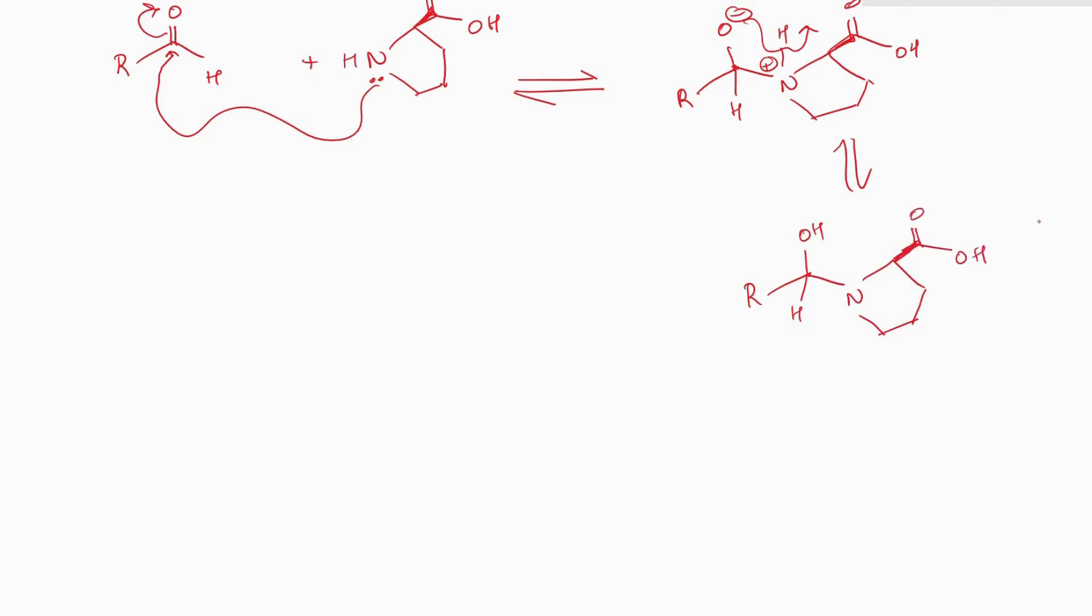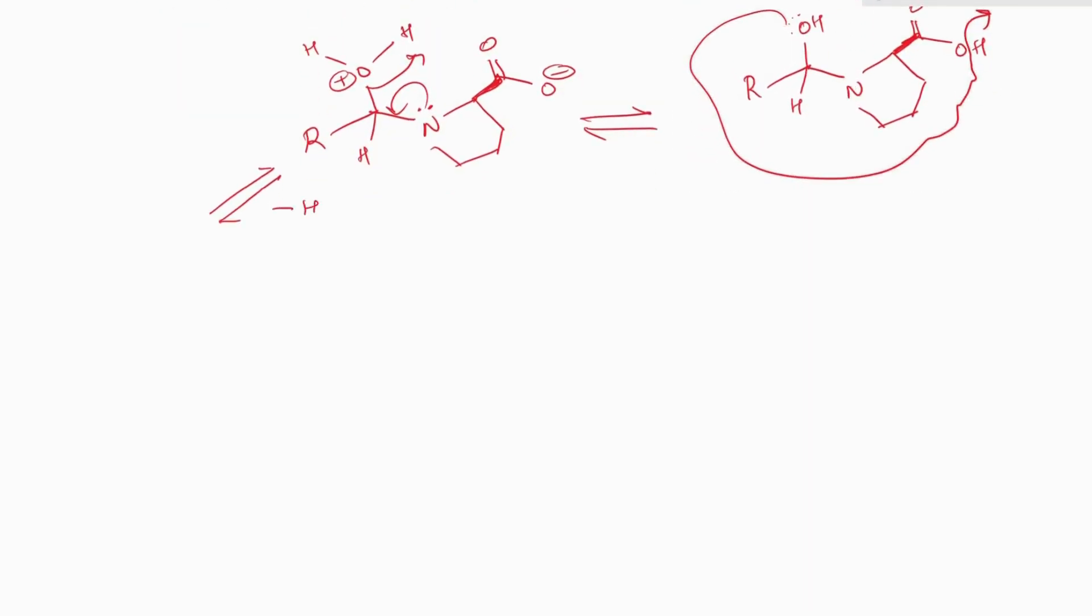Now the proton of this acid group is highly acidic, so it is extracted by this oxygen and formation of water molecule, which is a good leaving group. Our next step will be removal of this water molecule as a leaving group and formation of this type of intermediate.